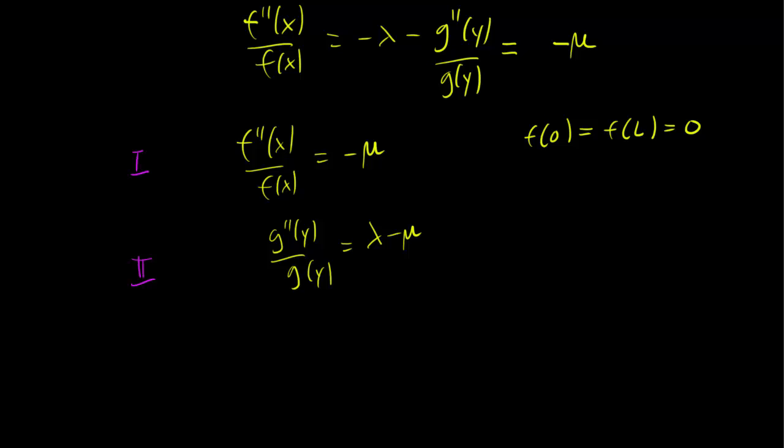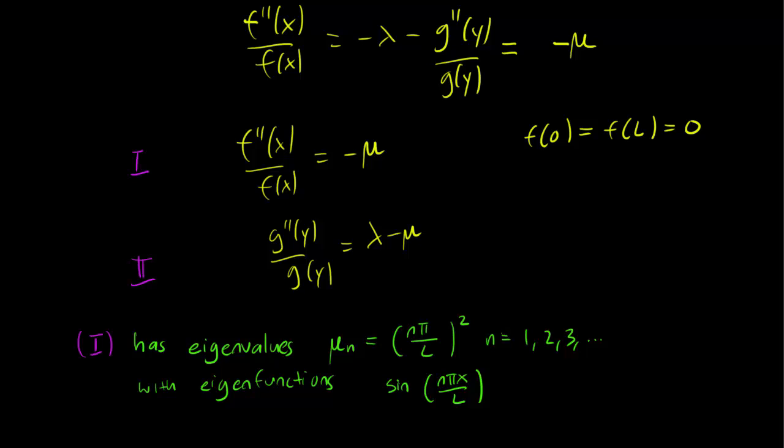And the solution for problem 1 is that we have eigenvalues (nπ/L)², with n equals 1, 2, 3, and so on, with eigenfunctions sin(nπx/L). Well, this is just the same eigenvalue problem we have dealt with over and over again in the first few chapters of this course.